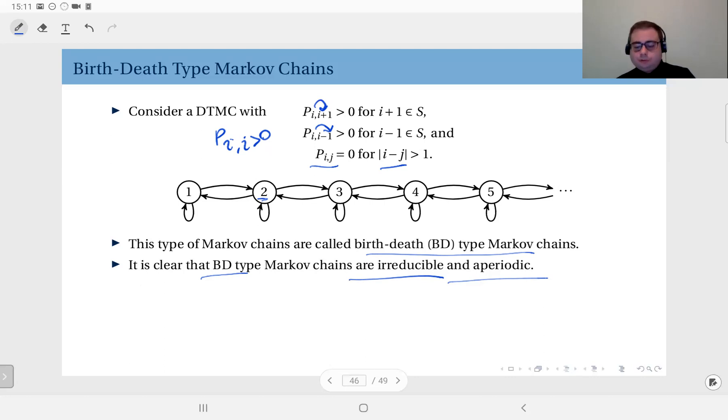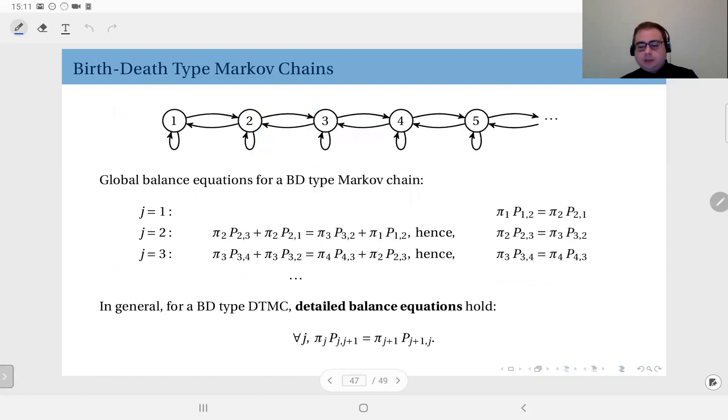If you want to solve such a chain, a birth-death type chain, write the global balance equations. For instance, for the first state j equals 1, disregard the loop. The probable flux out of 1 is just P_12 multiplied by π_1. That should equal the flux incoming, which we denote as flux outgoing equals flux incoming, and that's π_2 times P_21.